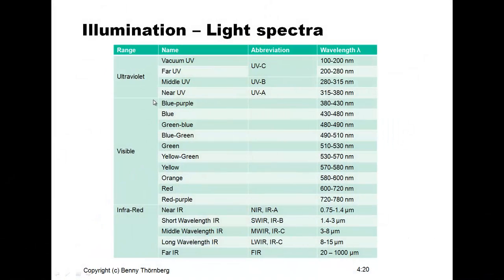We can divide the light into wavelengths that are visible for humans — the visible light — and we have shorter wavelengths having photons with higher energy: the ultraviolet light. This is the kind of light that comes from the sun and is a bit dangerous for your skin if you are out in the sun too much, especially the subclass called UVC with shorter wavelengths, which is quite dangerous and can cause skin cancer with excessive exposure.